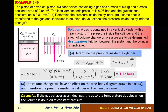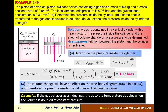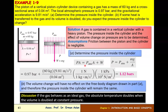We draw a free body diagram. The pressure inside acts upward over area A, and P_atm acts downward over area A, plus the weight W = mg acts downward. Force balance in the Z-direction: P×A = P_atm×A + W. Dividing by A gives: P = P_atm + mg/A.